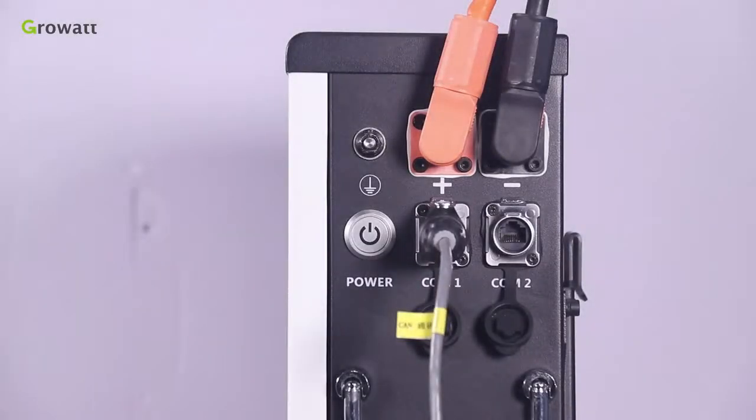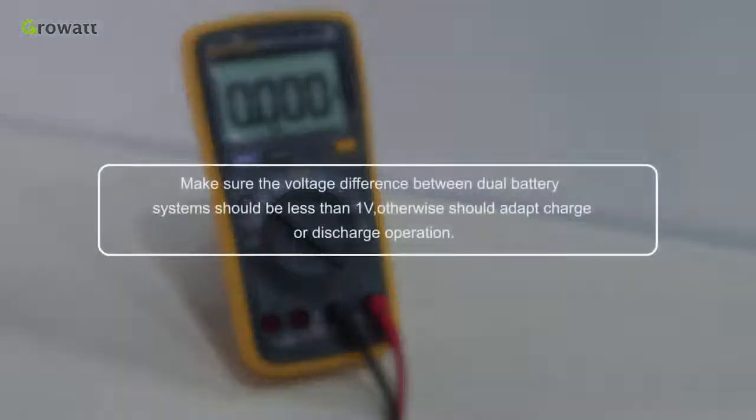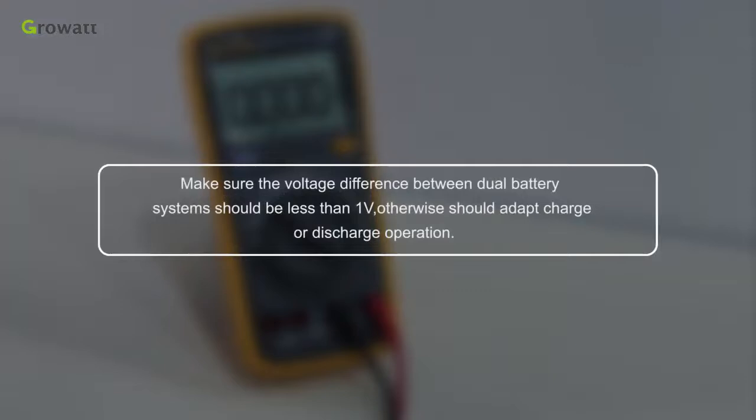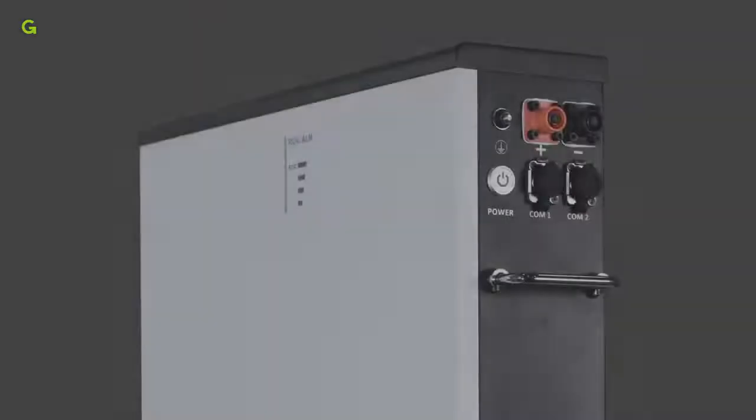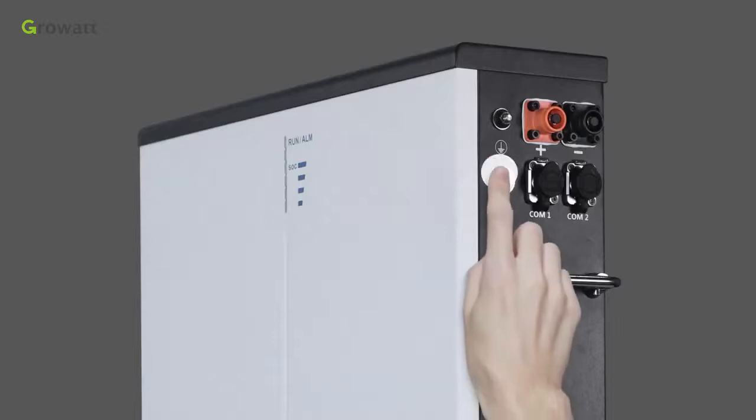Note that measure pack voltage with a multimeter can ensure off a dual battery system if the voltage difference is measured more than 1 volt. The difference shall be adjusted to be less than 1 volt either by charging the pack with lower voltage or discharging the pack with higher voltage before conducting the parallel connected installation. Our battery has one button shutdown function.